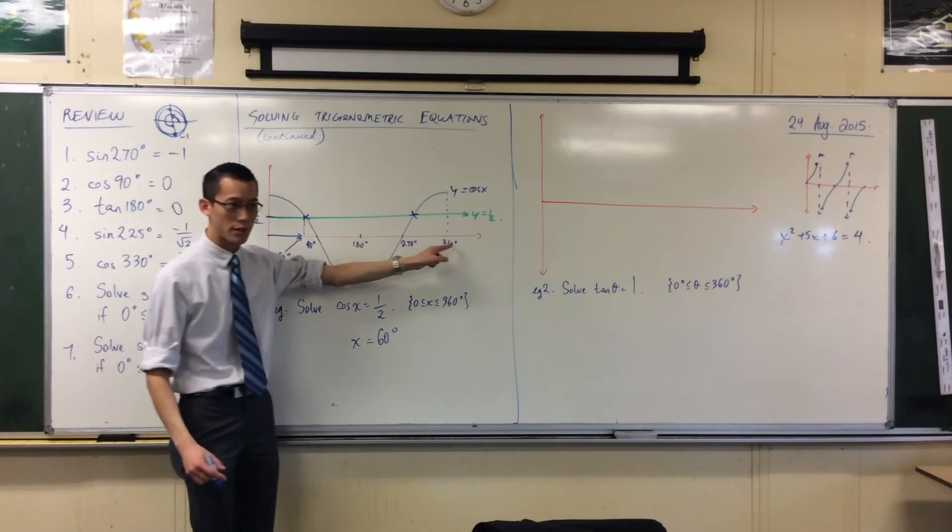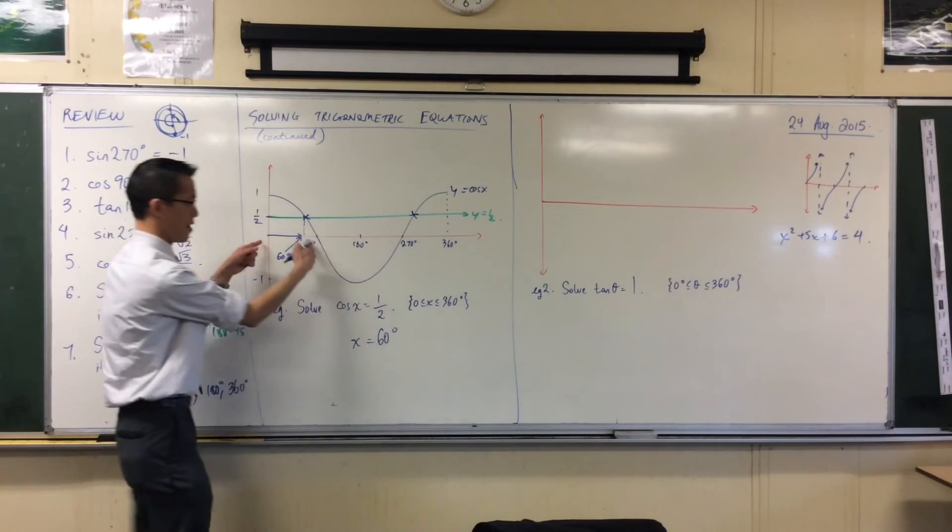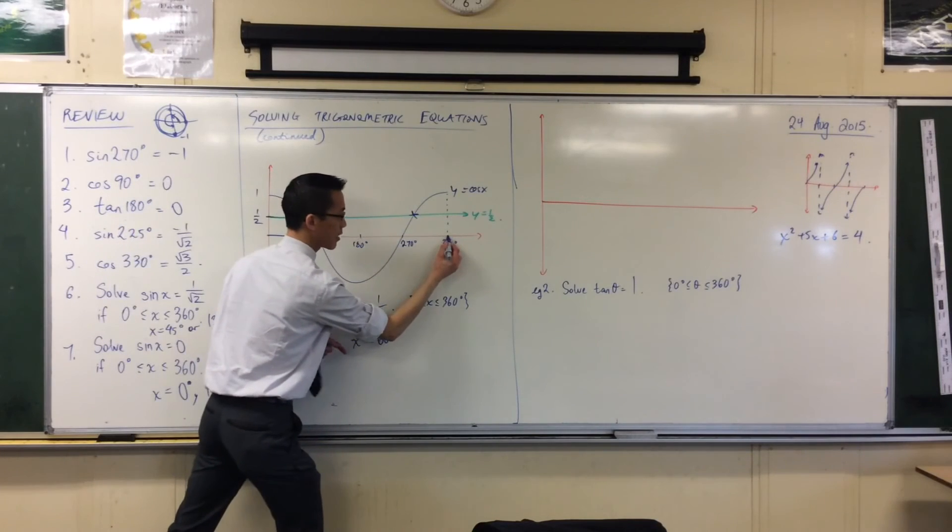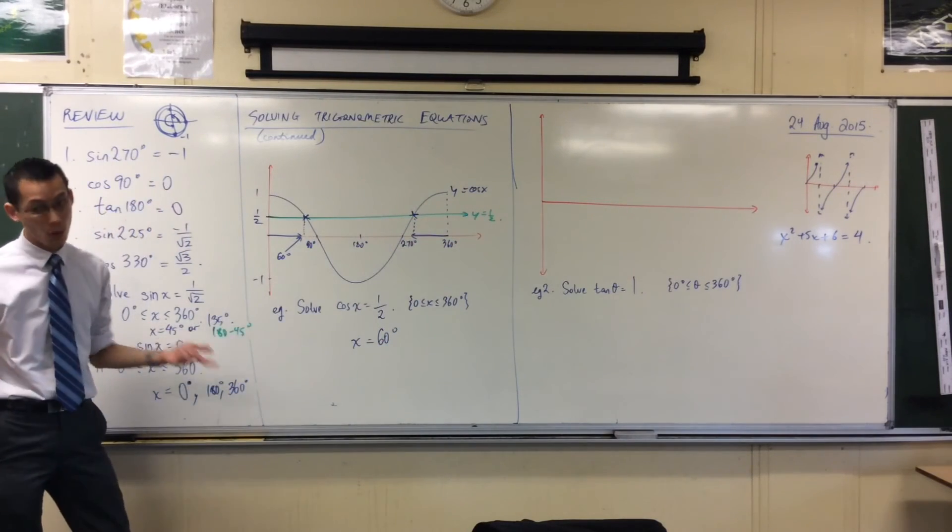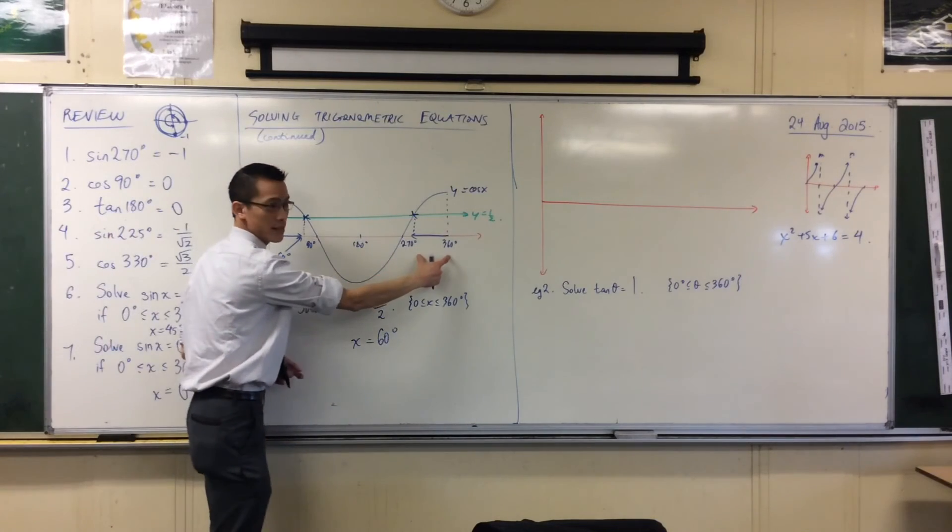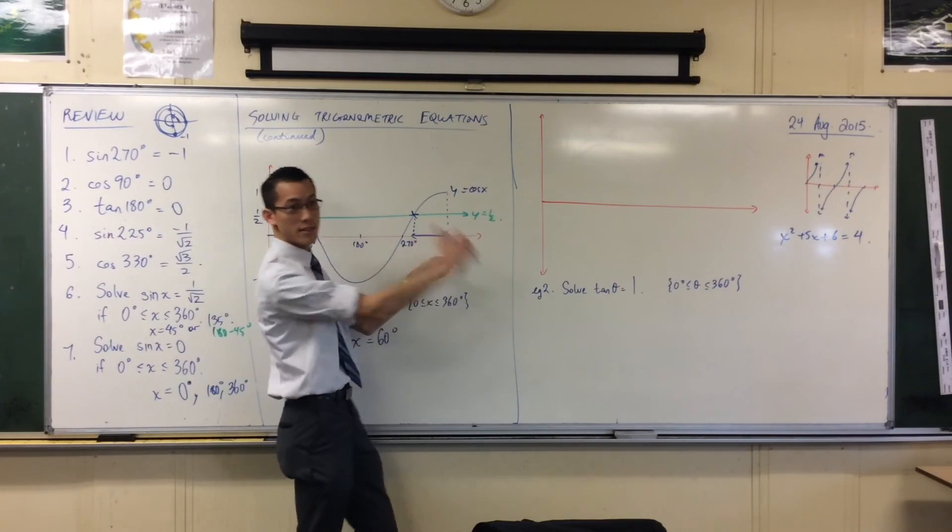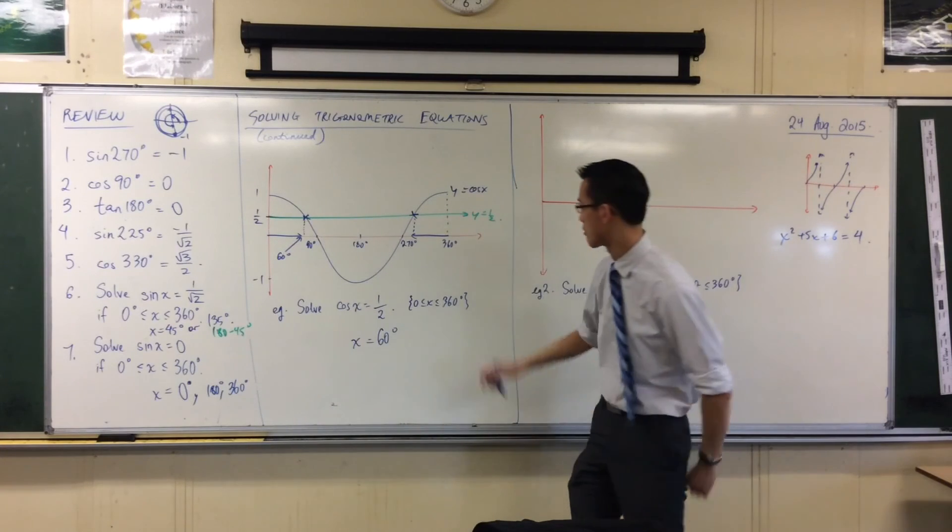I want to go backwards from 360. Can you see that that distance there should exactly match this distance here? So if it's also 60 degrees, that distance, and I'm starting from 360 going backwards, what's the actual answer? It'll be 300.